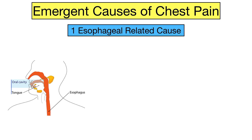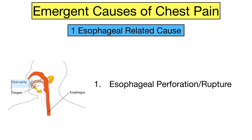Finally, there is one esophageal-related emergency that can cause chest pain. This is esophageal perforation or rupture, which is a tear or a hole in the esophagus. This can lead to food and fluid leaking out of the esophagus.